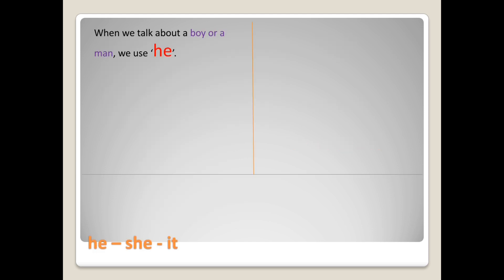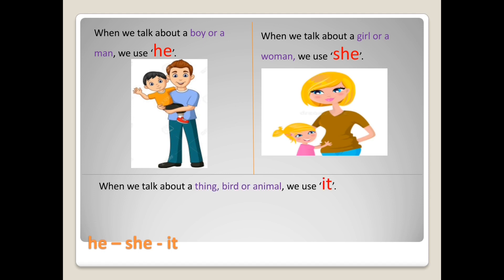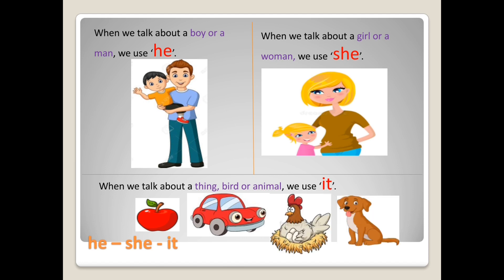When we talk about a boy or a man, we use he. When we talk about a girl or a woman, we use she. When we talk about a thing, bird, or animal, we use it.